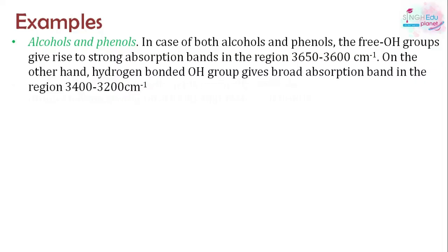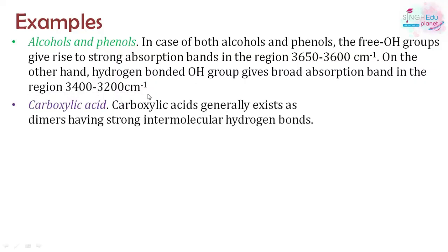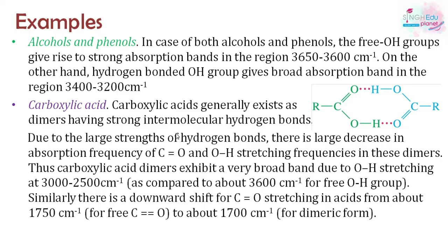In carboxylic acids, dimers form due to intermolecular hydrogen bonding. This strong hydrogen bonding significantly reduces both the O-H and C=O stretching frequencies. The O-H stretching shifts from the free value of 3650–3600 cm⁻¹ all the way down to 3500–2500 cm⁻¹ in carboxylic acids. The C=O stretching is also reduced from about 1750 cm⁻¹ to about 1700 cm⁻¹ due to the dimeric form.